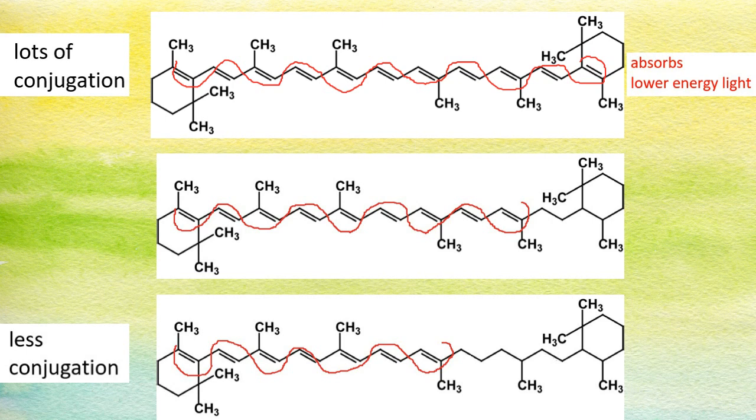Well, if there's lots of conjugated bonds then it absorbs low energy light towards the red end of the spectrum. And if there's less conjugation, it's going to absorb towards the higher energy end of the spectrum, which is the violet end.